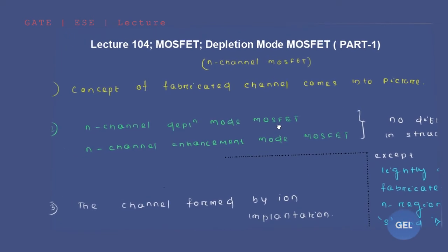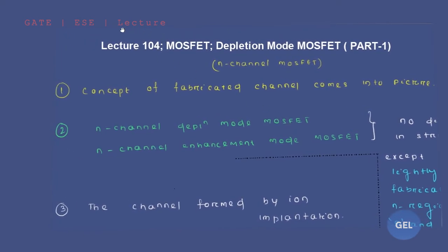Hi, welcome to Gel Gate ESC lecture. We are in lecture number 104 and this is your seventh module: MOSFET. In this video lecture we're going to discuss a chapter which is one of the most beautiful chapters of MOSFET — that is depletion mode MOSFET or depletion type MOSFET. This is part one; the next video will be part two and part three.